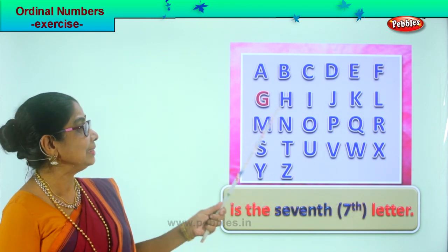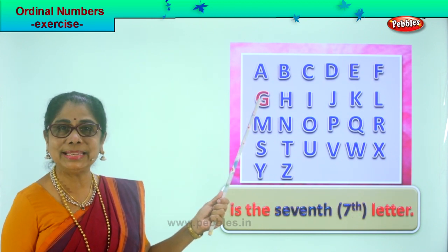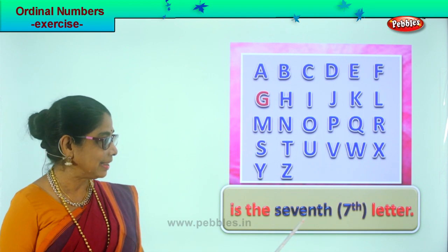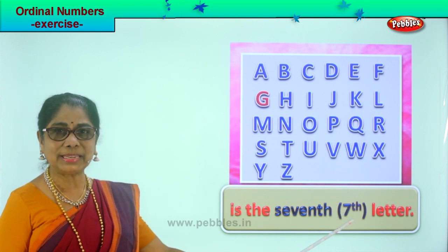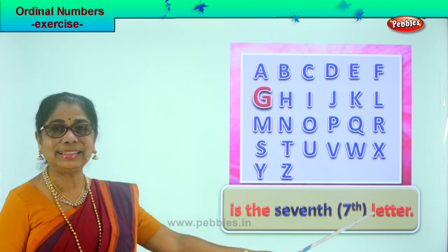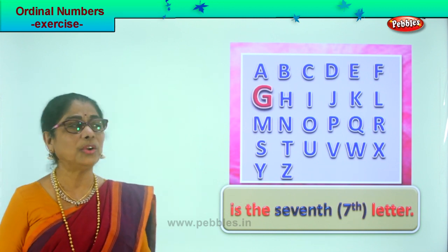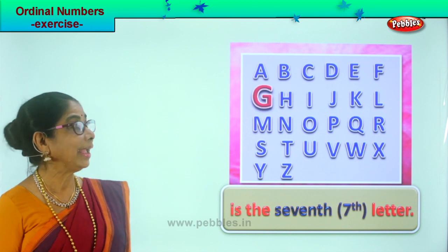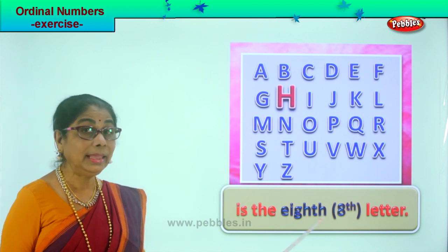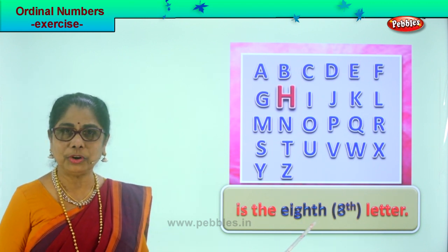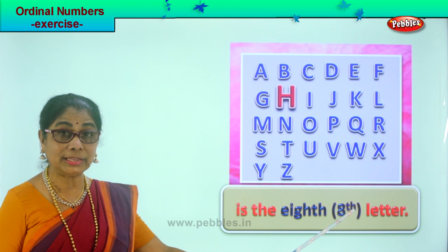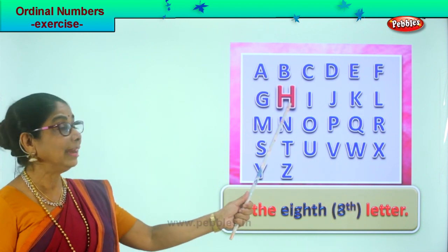The next letter is G. G is the seventh letter. You write seven and TH — that's how you represent the ordinal number seventh. Next, H — H is the eighth letter.